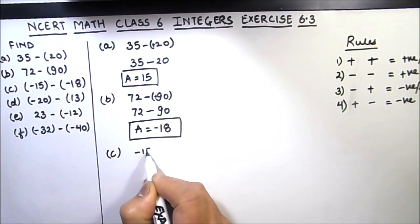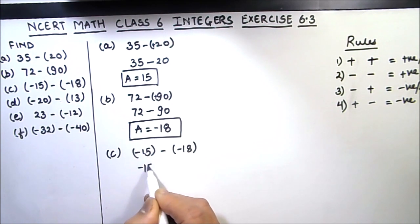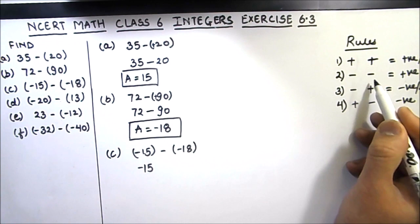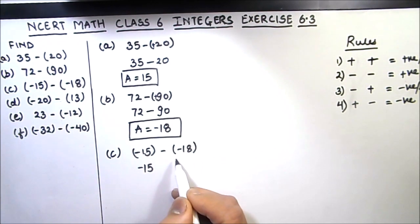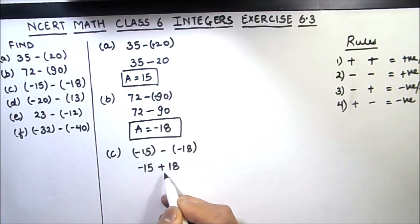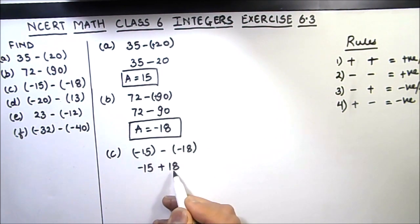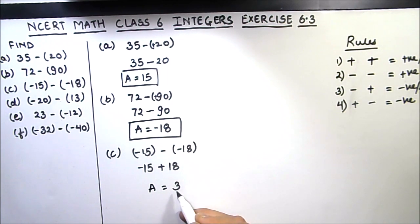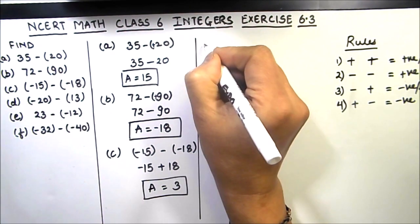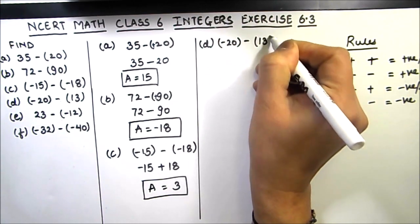The next part is minus 15 minus (-18). When we remove the brackets, minus and minus — same signs — gives positive, so this becomes minus 15 plus 18. Now minus and plus are different signs, meaning subtraction. We subtract 15 from 18: 18 minus 15 is 3. The bigger number is 18 and its sign is positive, so the answer is plus 3.